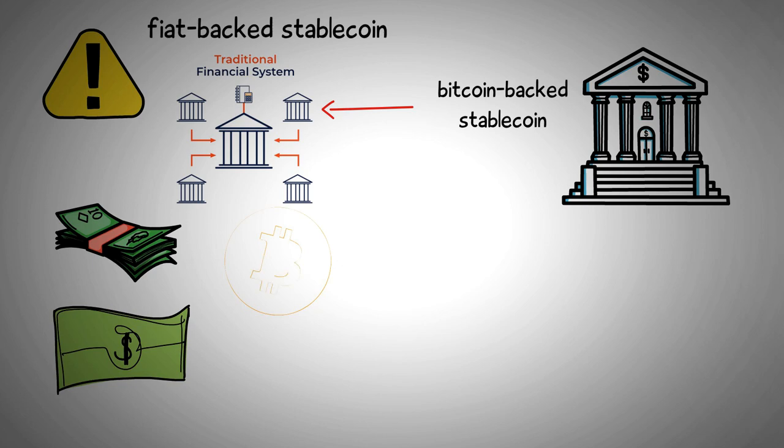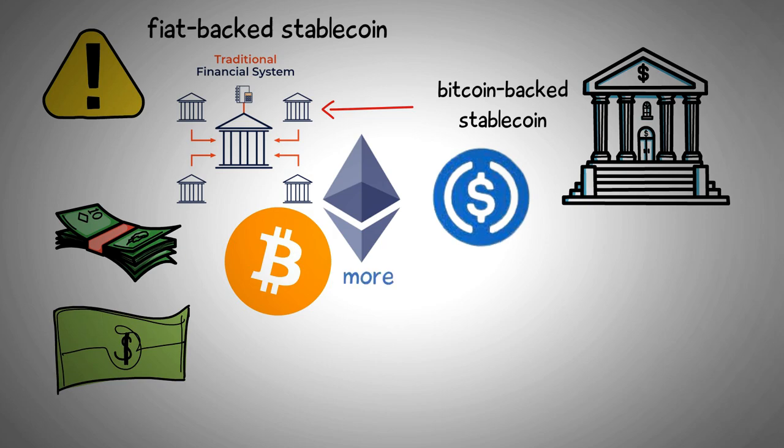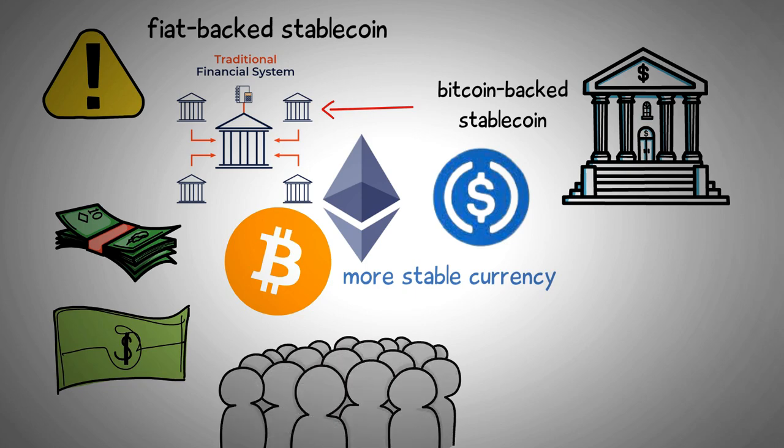The value of cryptocurrencies like Bitcoin and Ether fluctuates a lot, sometimes by the minute. The fact that stablecoins are pegged to a more stable currency gives buyers and sellers certainty that the value of their tokens won't rise or crash unpredictably in the near future.